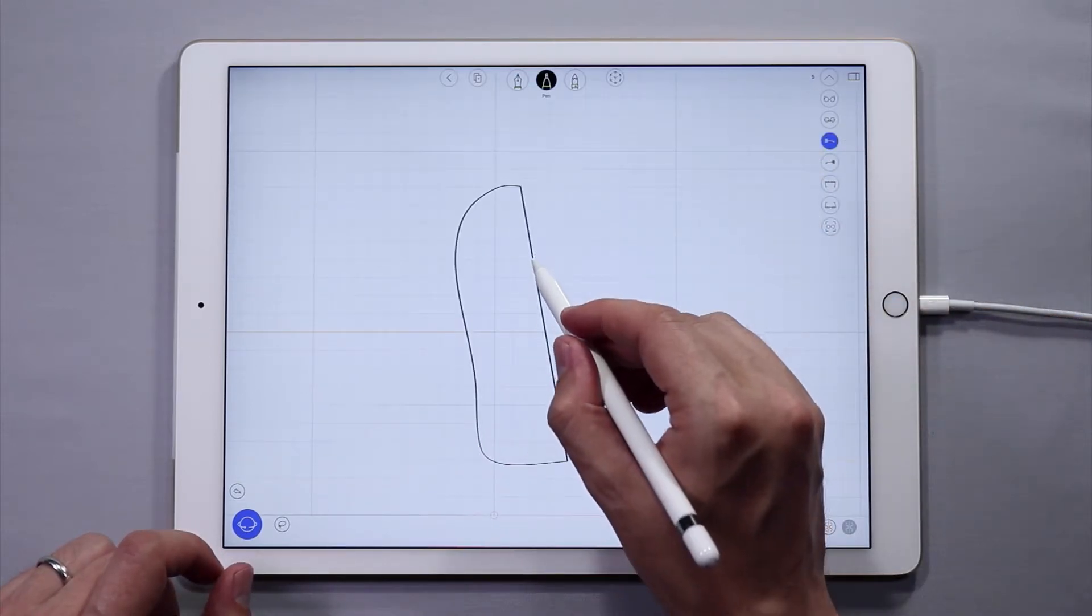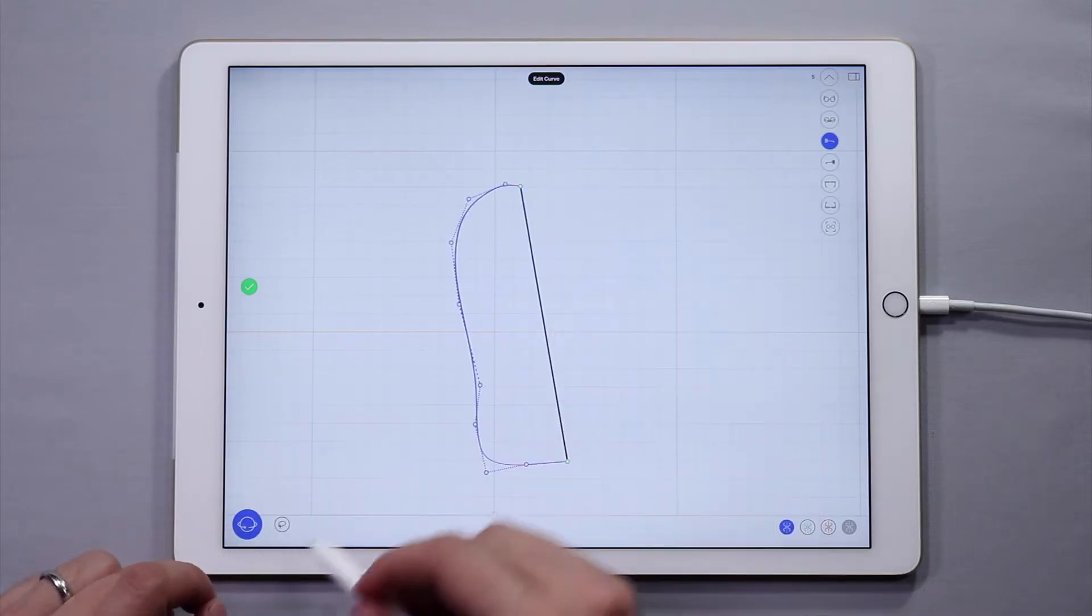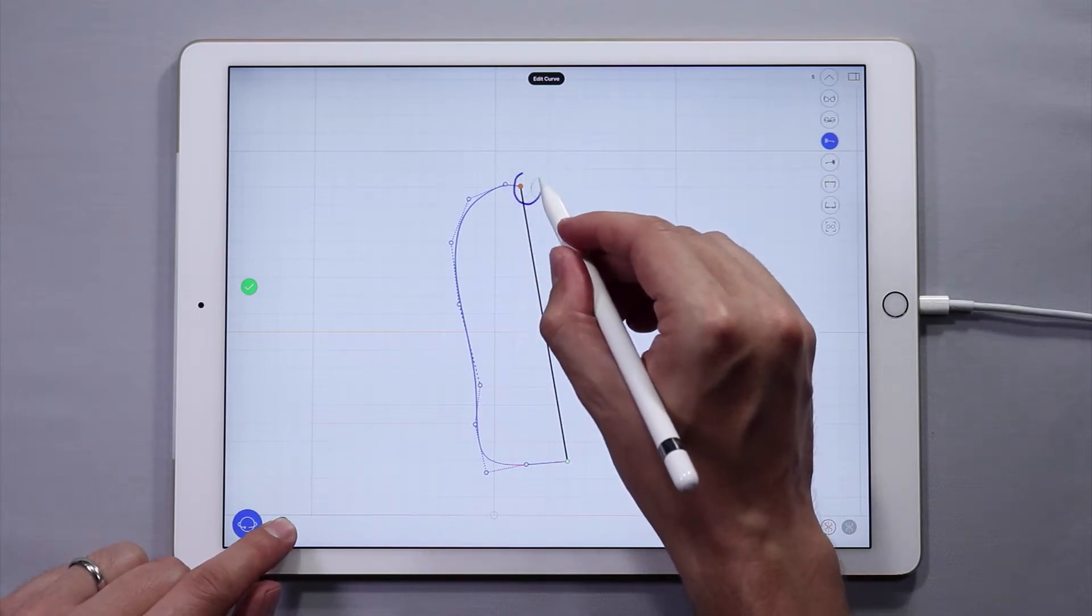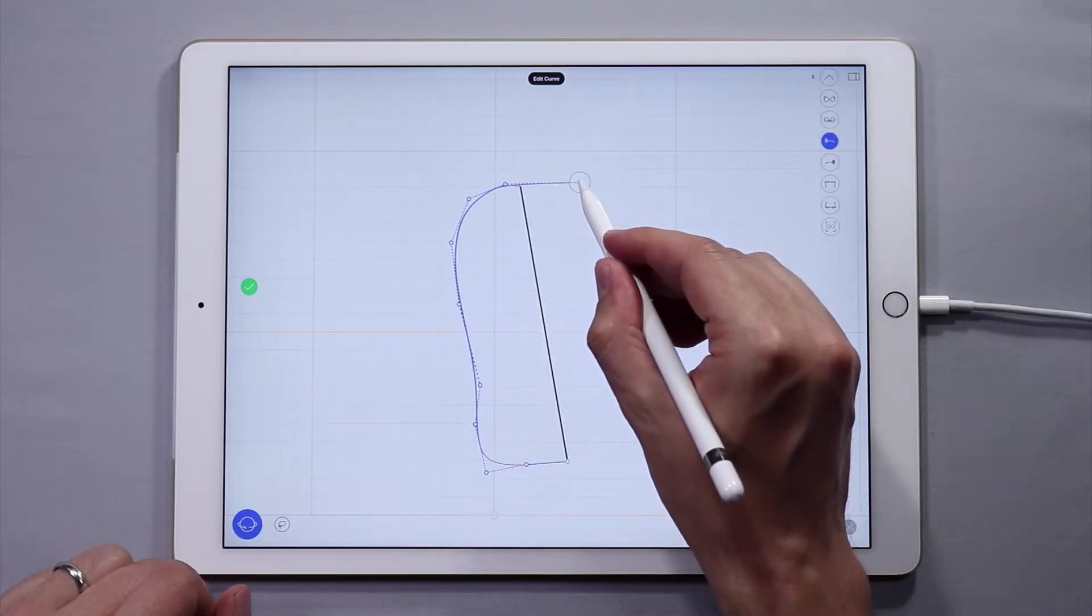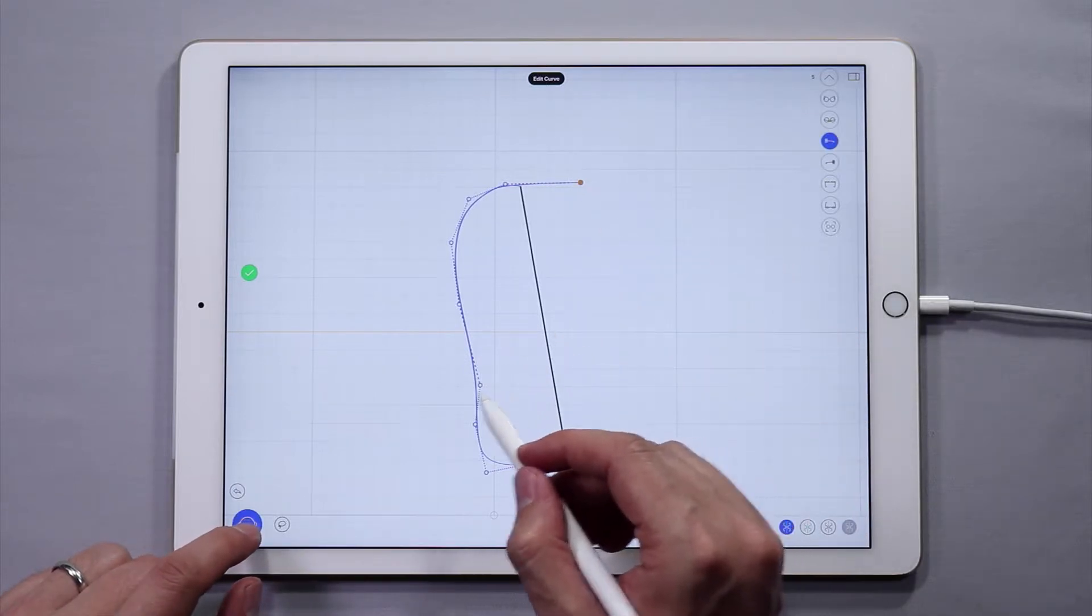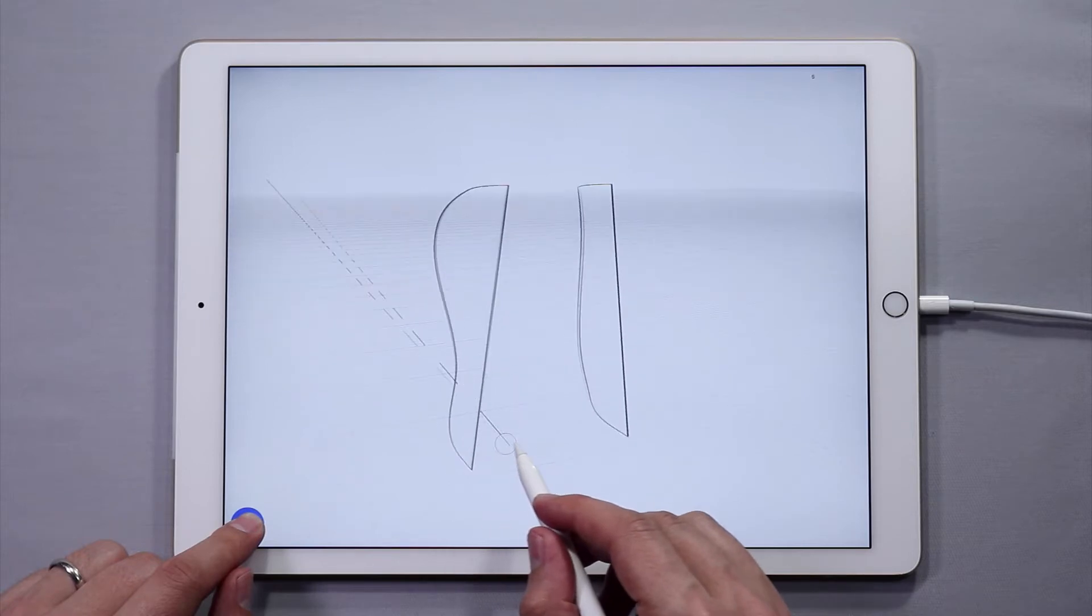Now let's edit the shape a bit more. Just simply tap and hold and move the control points until you get it the way you want. And this is looking more like a backpack. Now orbit around your design to make sure the elements look good and are aligned.